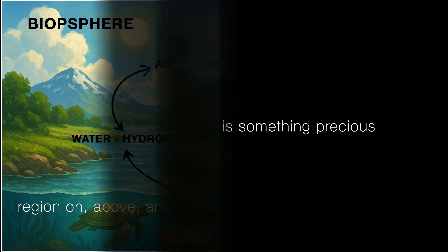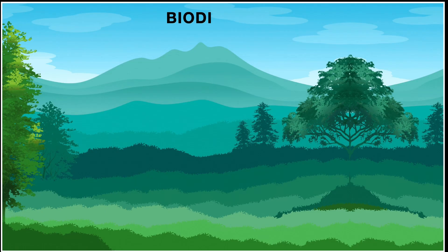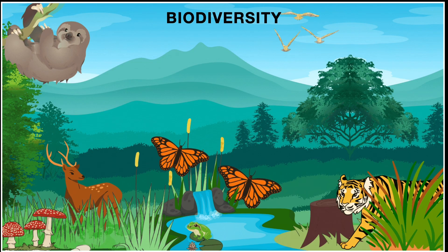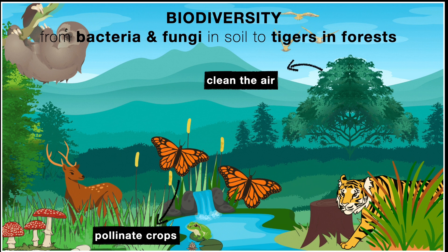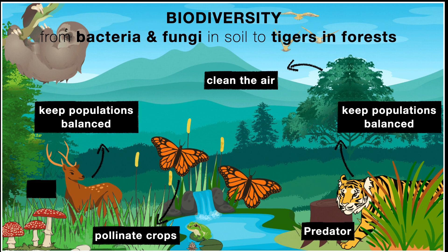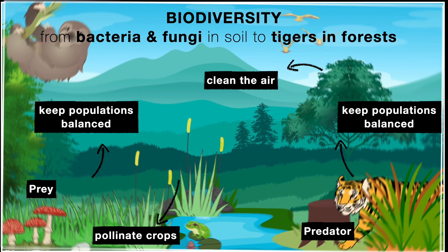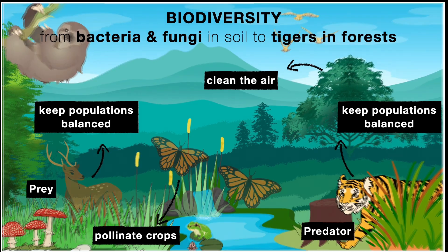Inside this biosphere is something precious — biodiversity. The enormous variety of life, from bacteria and fungi in the soil to tigers in the forest. Every organism plays a role: some clean the air, others pollinate the crops, some keep populations balanced by being predators or prey. And if you lose one part of the web, the whole system can wobble.